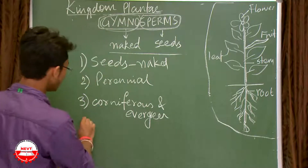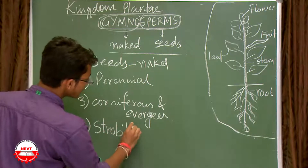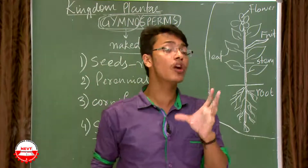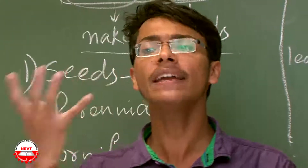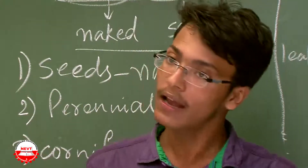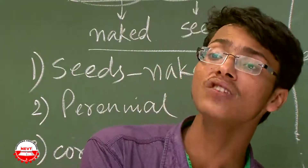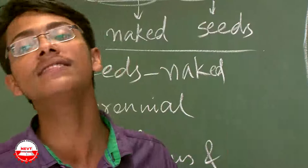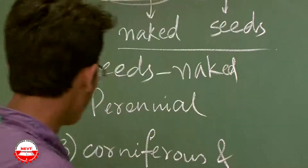The next characteristic is the presence of strobili. This is not in the syllabus but worth knowing. Strobilus is the structure that bears male or female sex organs. The male strobilus contains the male sex organ and the female strobilus contains the female sex organ. Strobilus is a major characteristic of plants under the gymnosperms division.